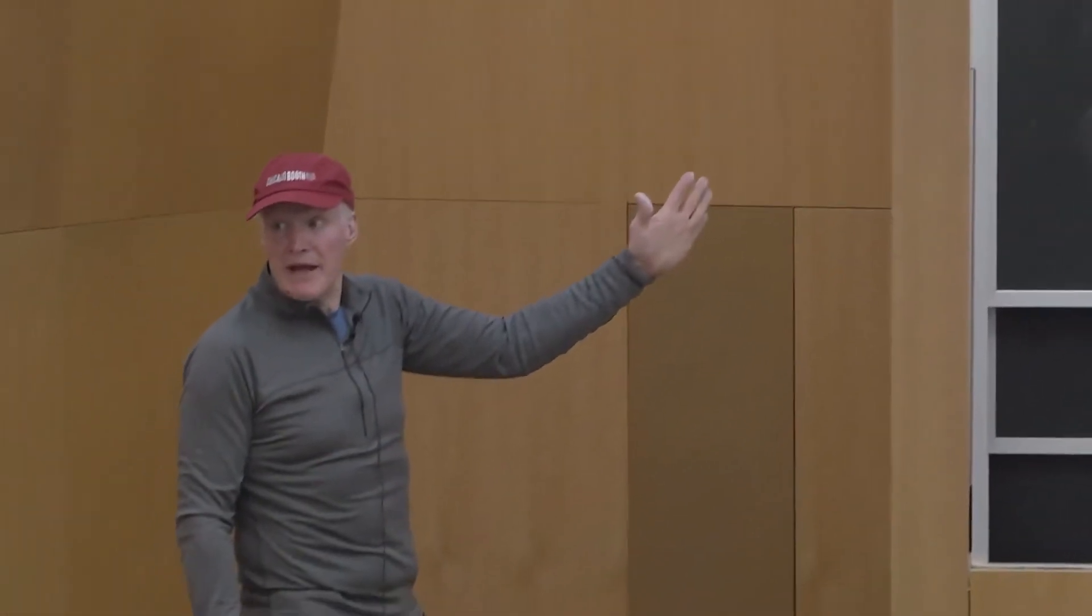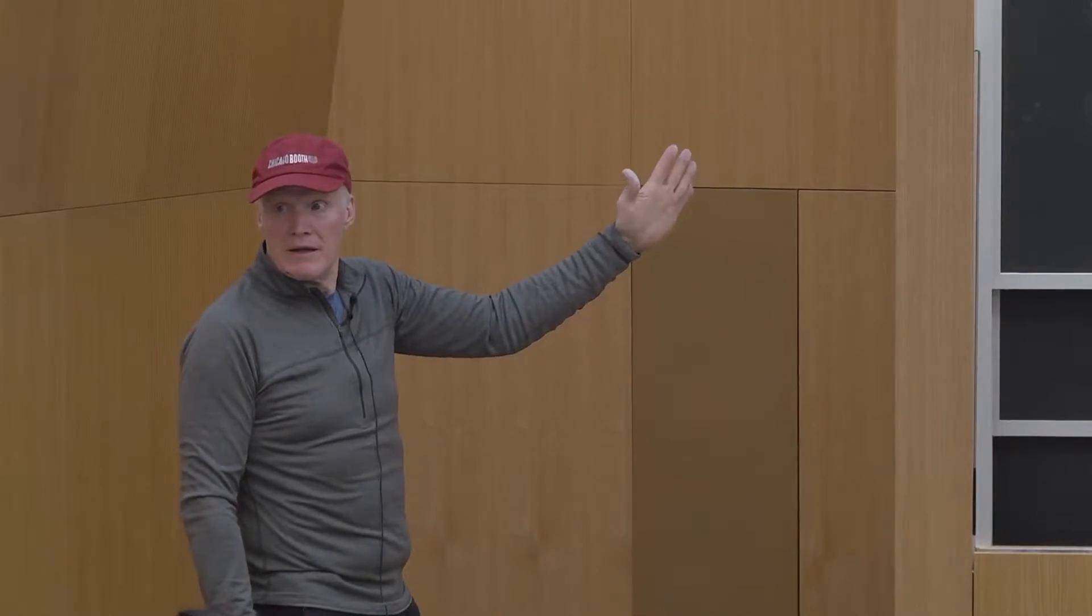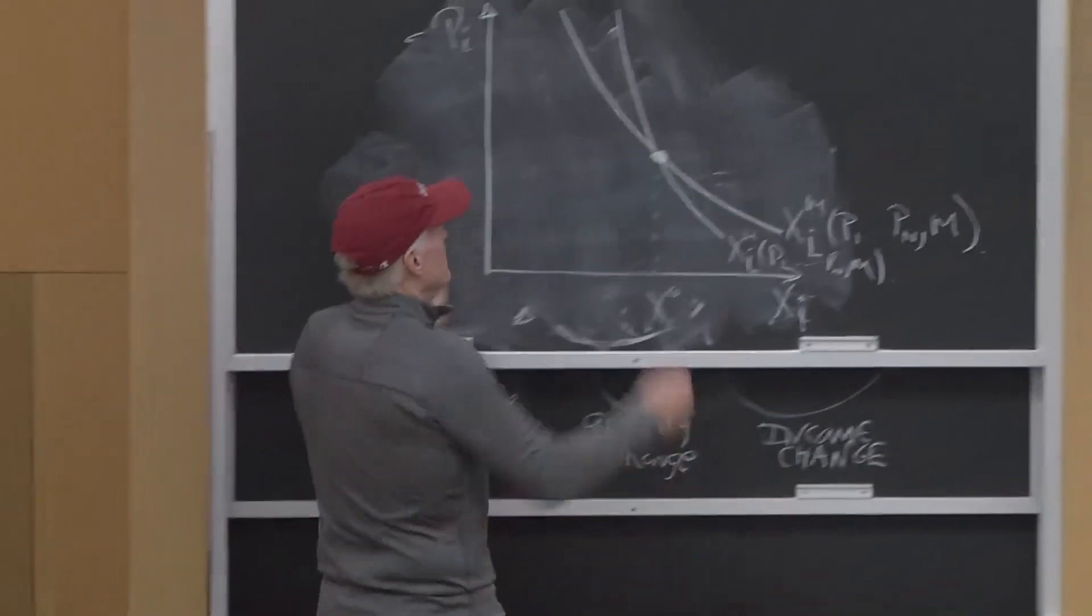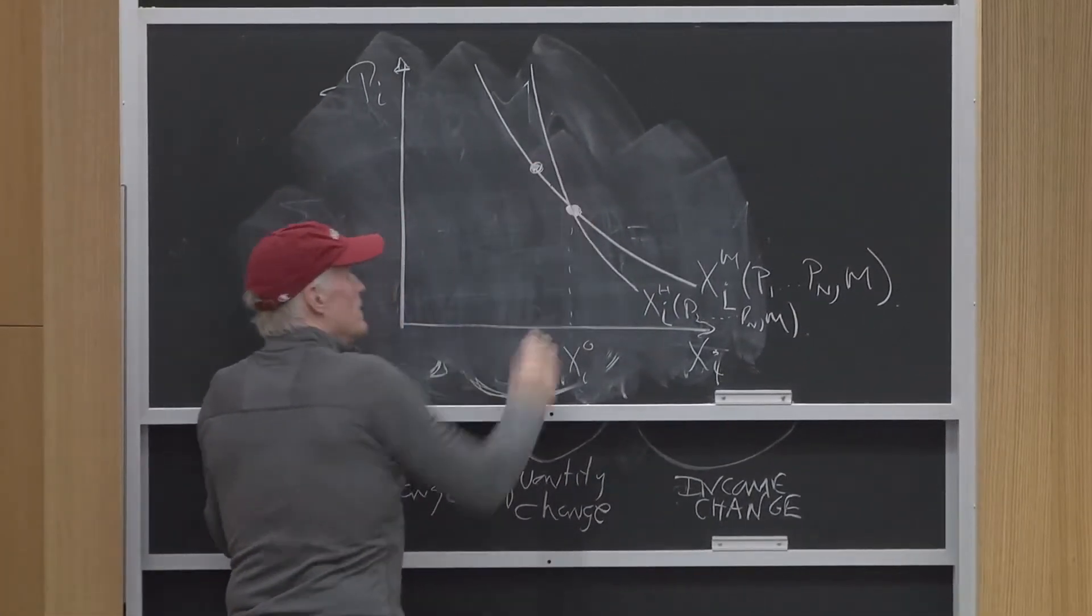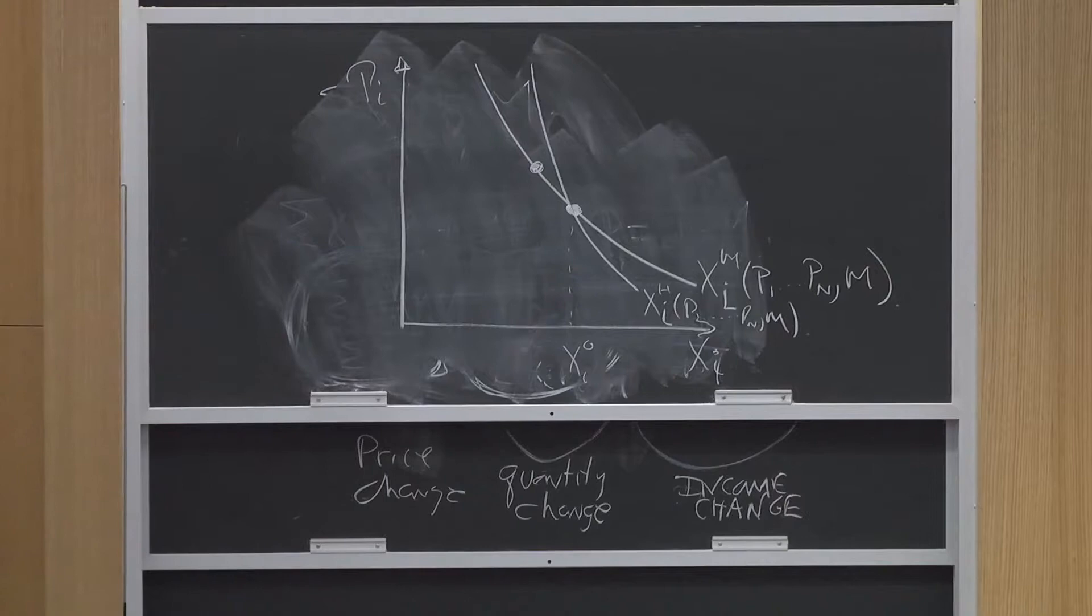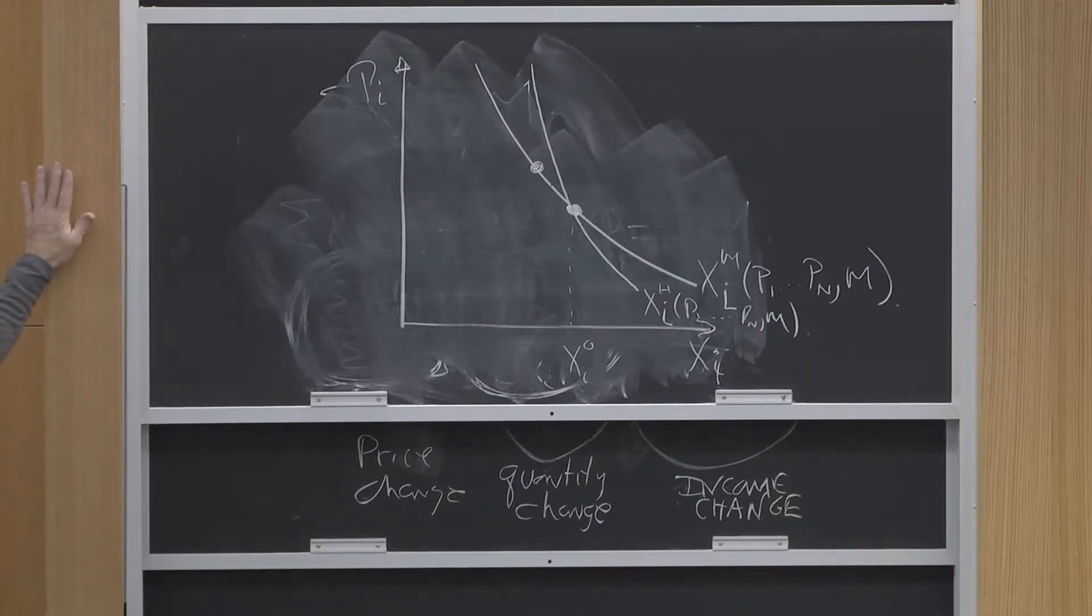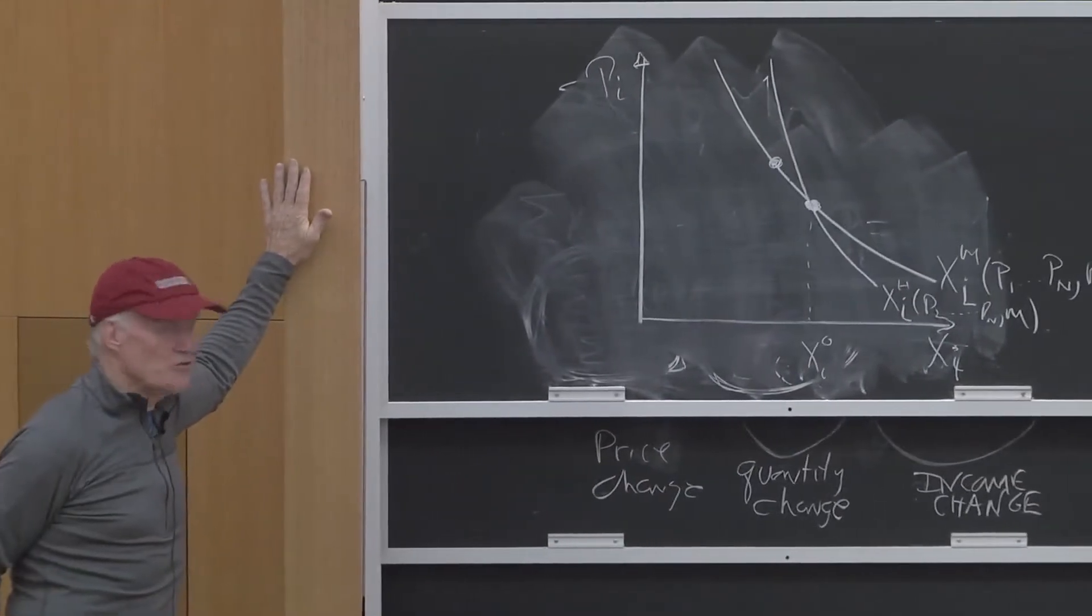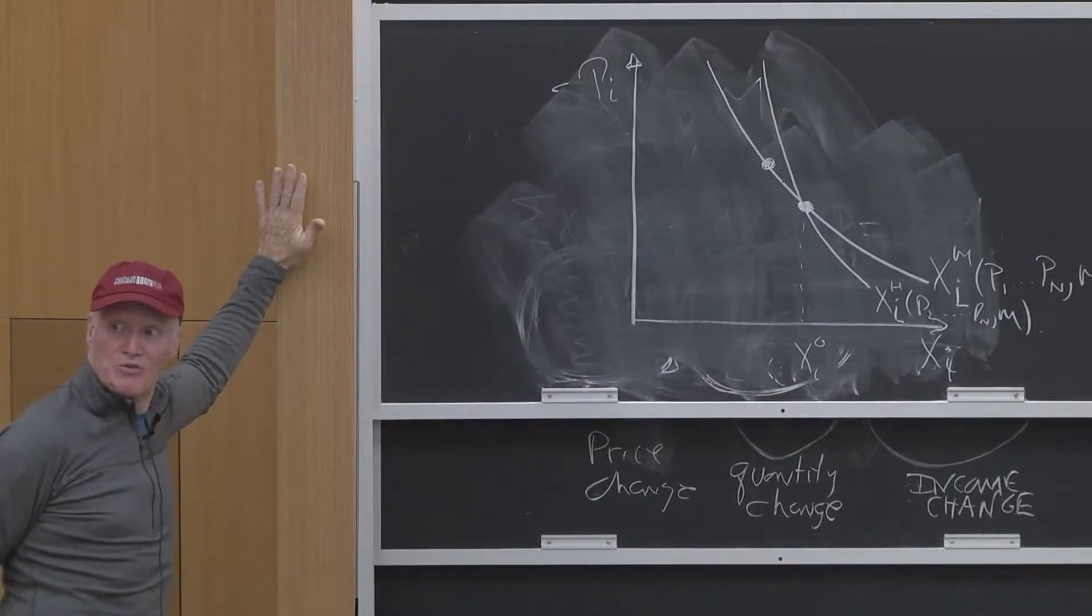Now there's not just one Hicksian demand curve. How does utility compare at this point to that point? As I move up that Marshallian demand curve, holding income and all other prices constant, is the guy better off or worse off? He's worse off, unambiguously worse off.